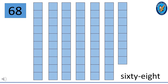This is 68. 6 and 8 make 68. 68 is made up of 6 ten-squared blocks and 8 squares. That means 60 plus 8 gives you 68, and the number name is located at the bottom right of your screen.